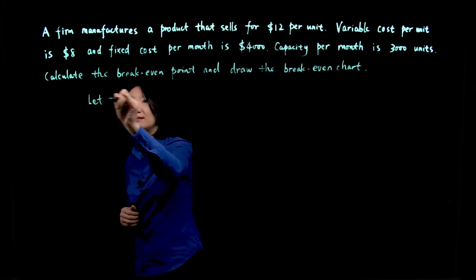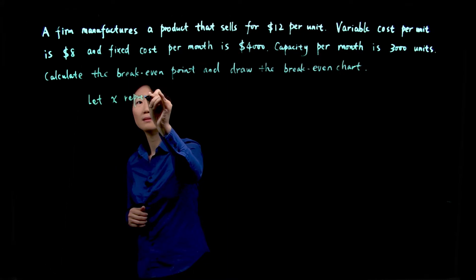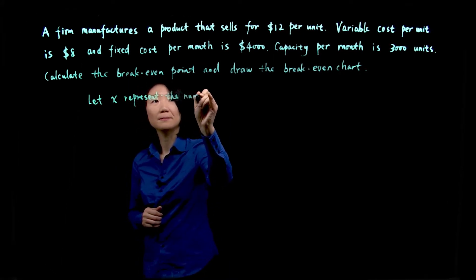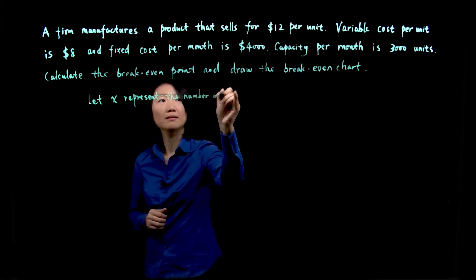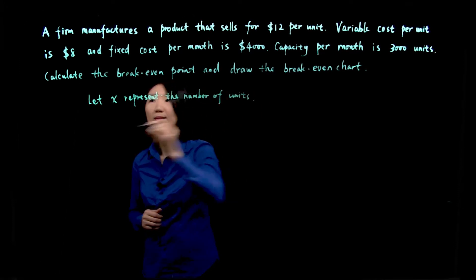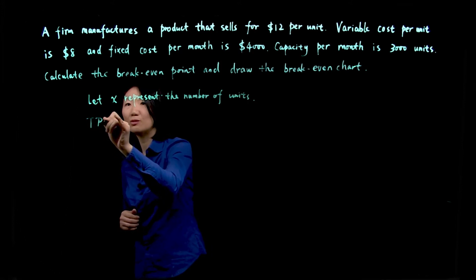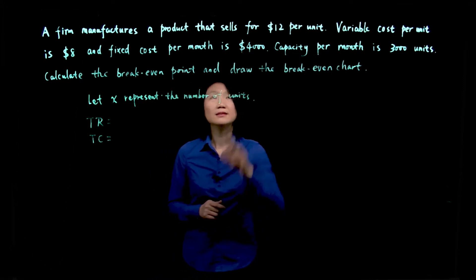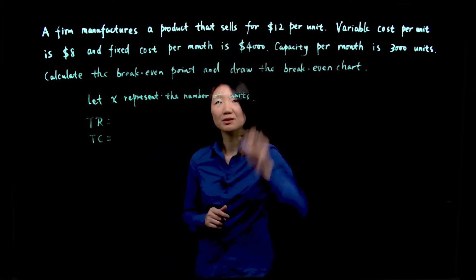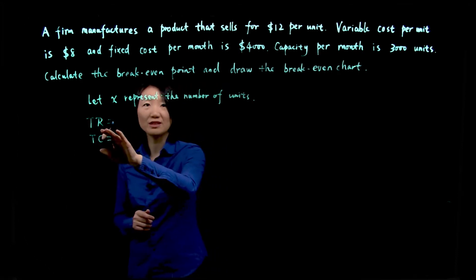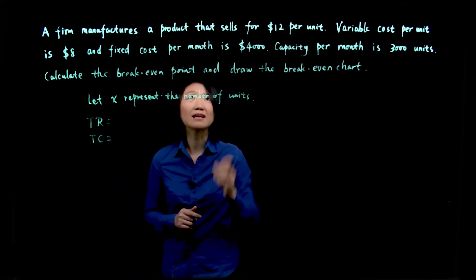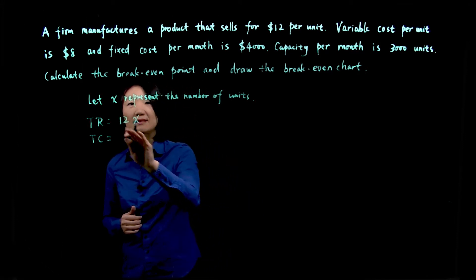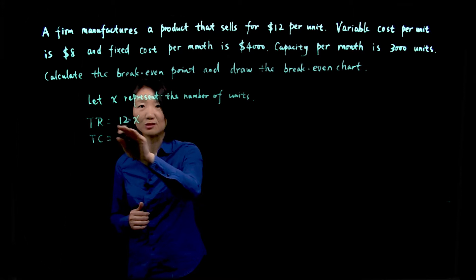So let x represent the number of units. Let's try to write down total revenue and total cost function. Since the price of the product is $12 per unit, that means total revenue is really depending on how many units are produced and sold. So $12 per unit times number of units. So that's the total revenue.